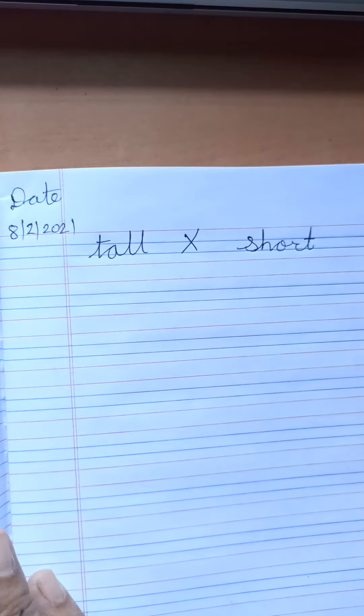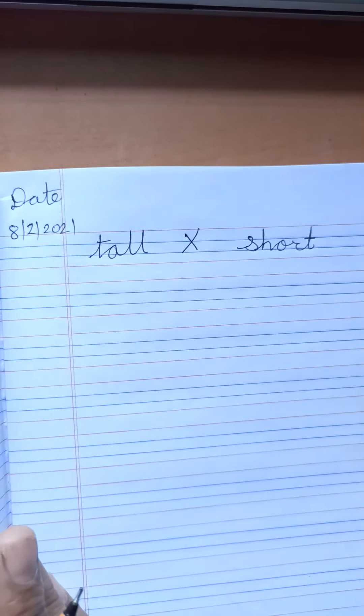Tall, short. Tall ka matlab hai height mein zyada. Tall, ooncha. Short ka matlab hai chota.